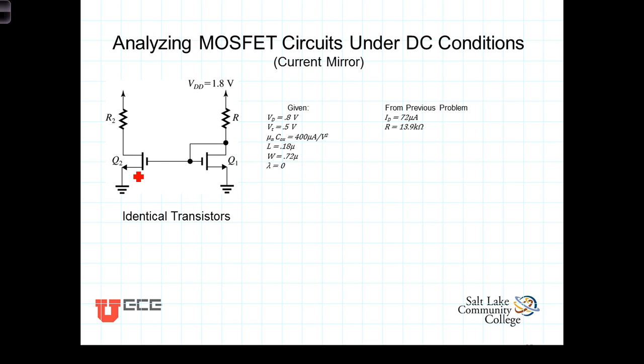Right at the edge means that's at the point where VDS, we'll write it over here, VDS is equal to VGS minus VT.